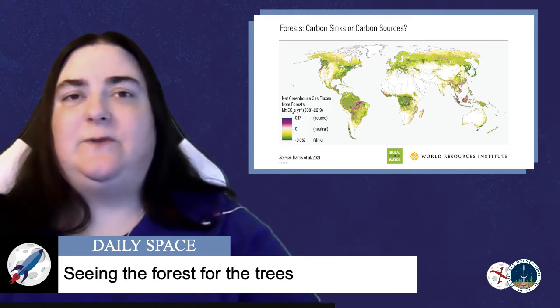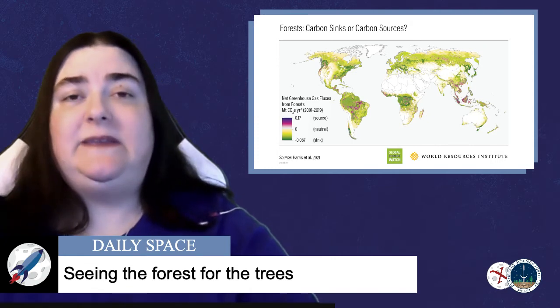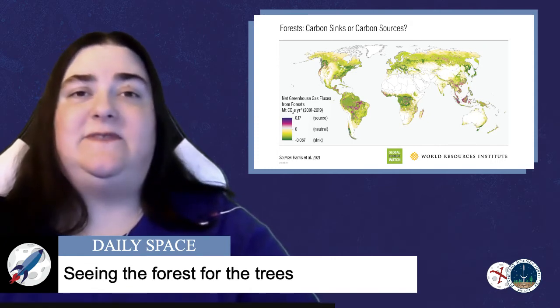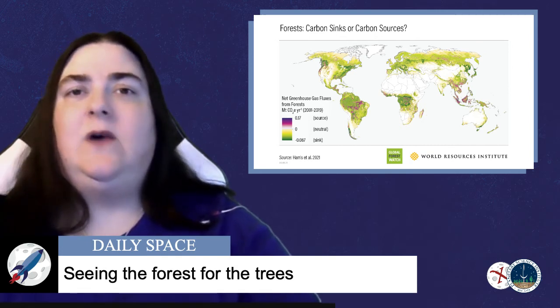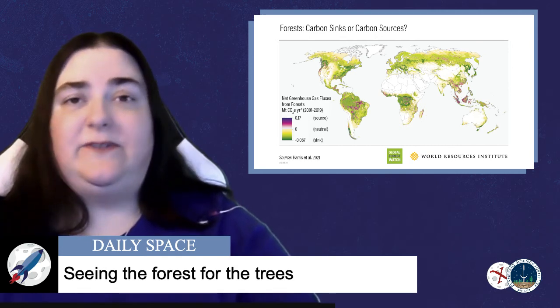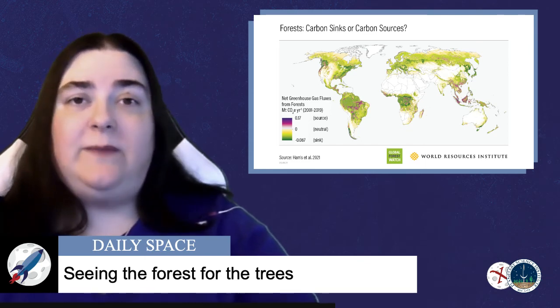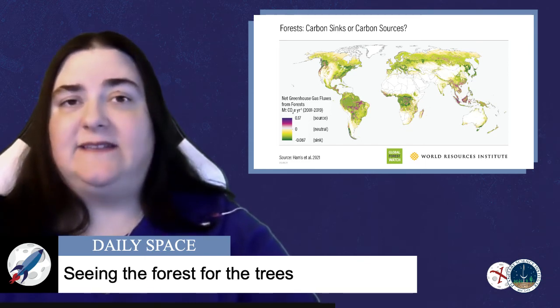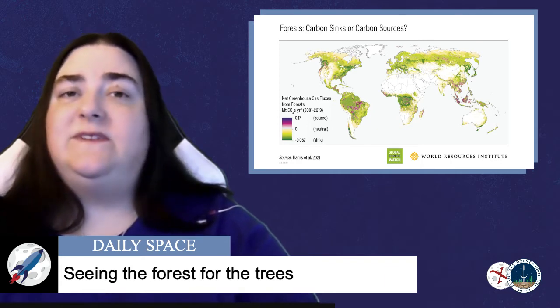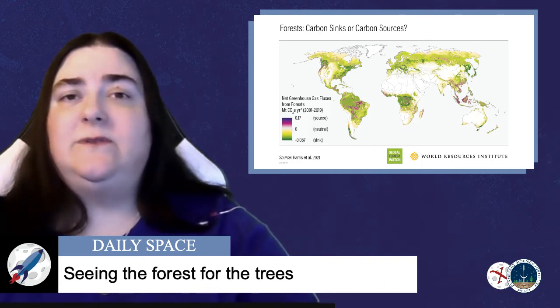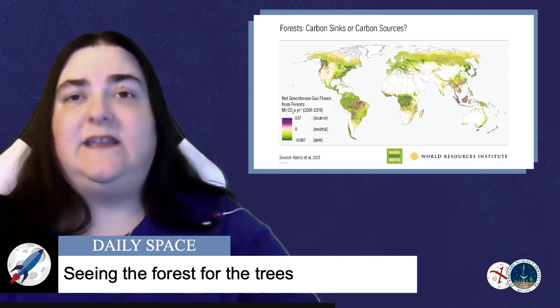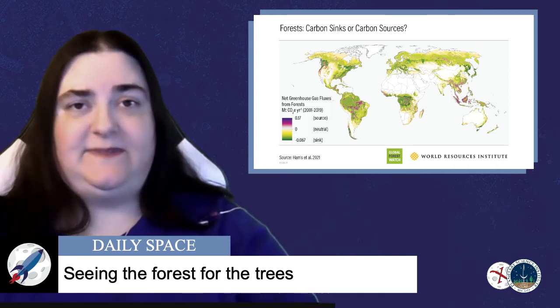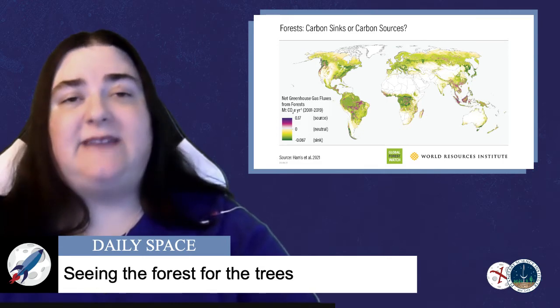Per the press release, according to the researchers, forests collectively absorbed around 15.6 billion metric tons of carbon dioxide from Earth's atmosphere each year between 2001 and 2019, while deforestation, fires, and other disturbances released an average of 8.1 billion metric tons of carbon dioxide per year. Forests around the world are estimated to absorb about 7.6 billion metric tons, acting as a net carbon sink of roughly 1.5 times the annual emissions from the entire United States.